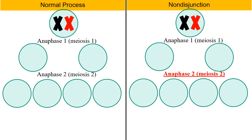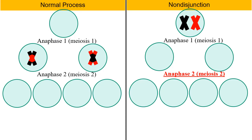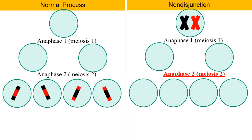Let's do a side-by-side comparison. On the left is a cell going through the normal process of meiosis. Crossing over just occurred, where chromosomes break off and exchange segments with one another. As we go through meiosis 1, we reach anaphase 1, where the two chromosomes separate. Then as we go through meiosis 2, the two halves of the chromosomes — the chromatids — separate. We have four cells created, each with one copy of the genetic material. This is the normal process of meiosis.